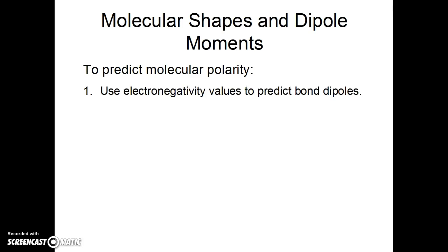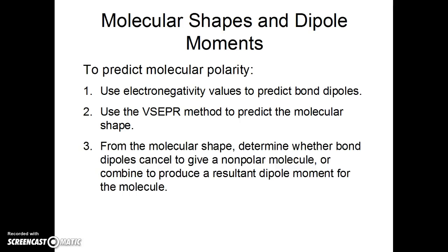To predict molecular polarity, step one is to use your electronegativity values to predict bond dipoles. Step two, you'll use the VSEPR method. Look at where the electron centers are and predict the molecular shape. It helps to arrange the electron centers first and then move the bonded atoms, the atoms that are bonded to the central atom, move them around so that they get minimum energy, get as far away from each other as they can. And from the molecular shape, then, you can determine whether the bond dipoles are going to cancel, as they do in carbon dioxide. And even though they have dipole bonds, you have a non-polar molecule. Alternatively, they could combine, as in water, to produce a resulting dipole moment for the molecule, kind of an addition of dipole moments.